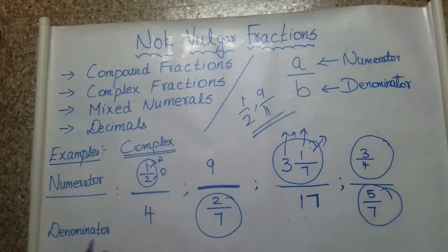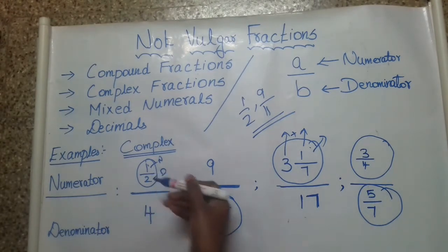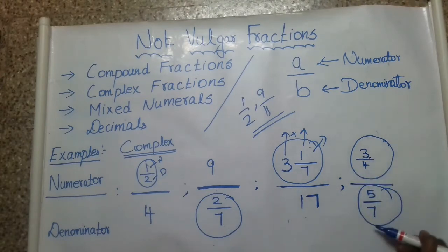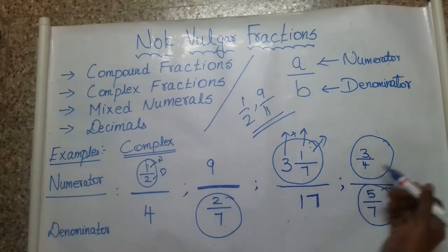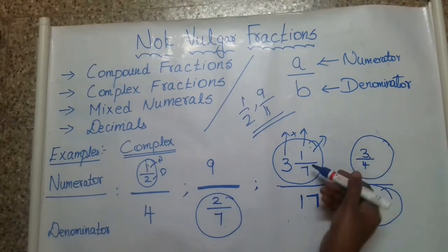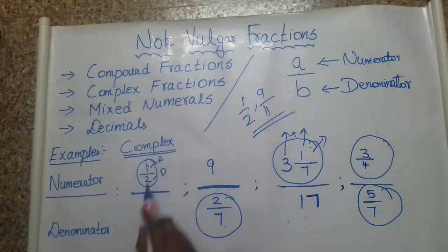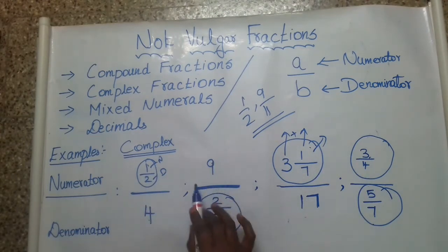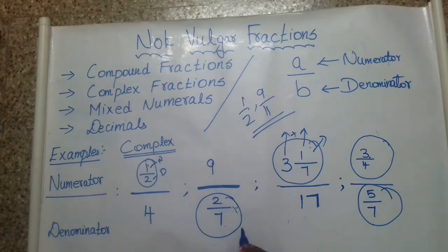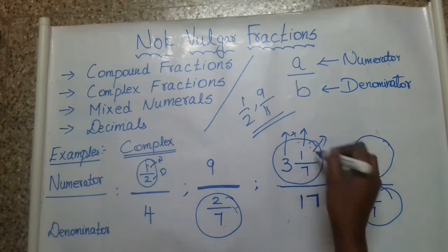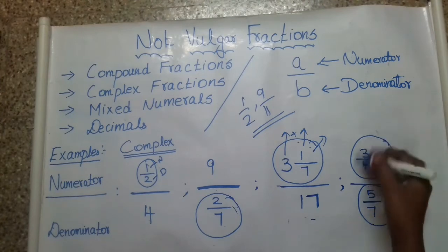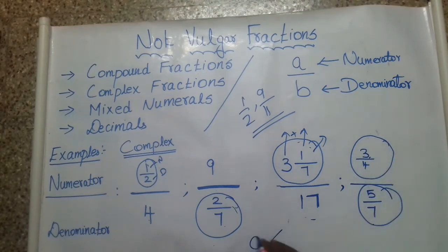To give a clear definition: in complex fractions, it is either the numerator or denominator or both that contains a fraction or a mixed numeral. So if you have a fraction divided by one denominator, or 9 divided by a fraction part, or a mixed numeral divided by 17 — then it is a fraction divided by a fraction. So these are not vulgar fractions.